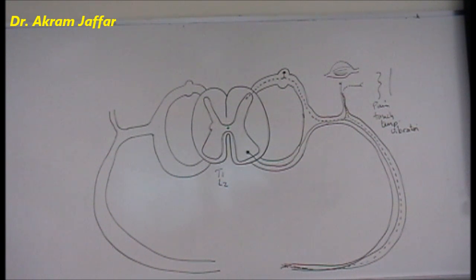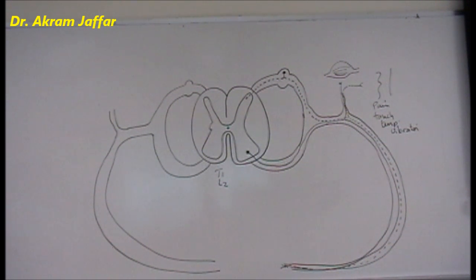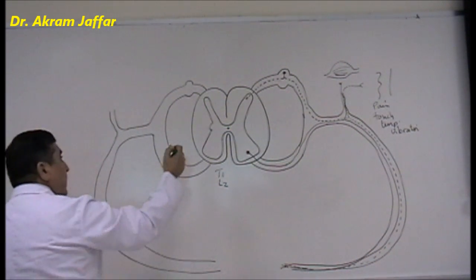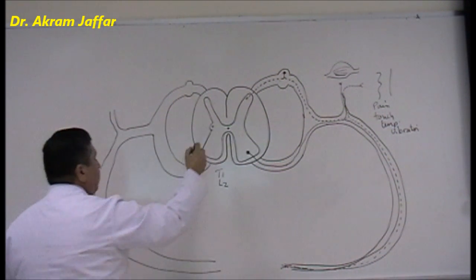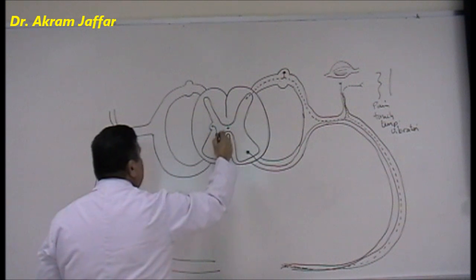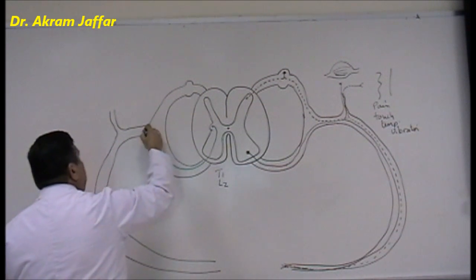The region from T1 to L2 is the outflow region of the sympathetic nervous system. There are no sympathetic fibers arising from the spinal cord above T1 or below L2 — this is L2 spinal cord segment level, not a vertebral level. These segments from T1 to L2 have a lateral horn in their spinal cord, and the lateral horn contains the cell bodies of the efferent fibers. These efferent fibers accompany the ventral root of the spinal nerve and continue into the spinal nerve itself.